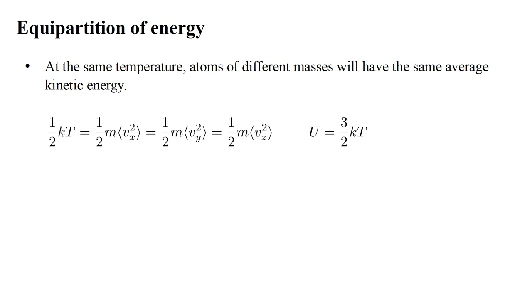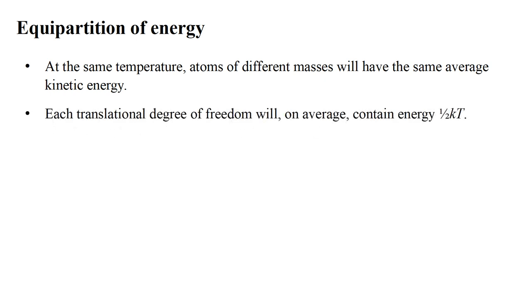Also in video two, we saw that the microscopic significance of temperature is that one-half KT equals the average kinetic energy of an atom's motion in a single spatial dimension: one-half M mean of V_x squared, or one-half M mean of V_y squared, or one-half M mean of V_z squared. The total energy of an atom is therefore three times one-half KT. So another aspect of equipartition of energy is that each translational degree of freedom will, on average, contain energy one-half KT.